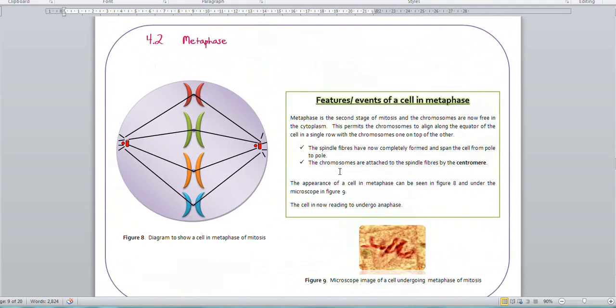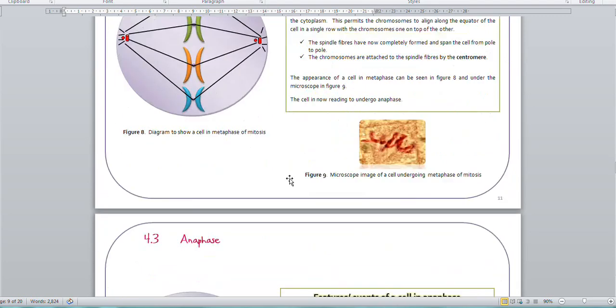So metaphase now is the next stage. The chromosomes are lined up along the equator. The spindle fibres have completely formed. They span from pole to pole. And, importantly, the chromosomes are attached to the spindle fibres via the centromeres. And that's pretty much all you can say about metaphase.